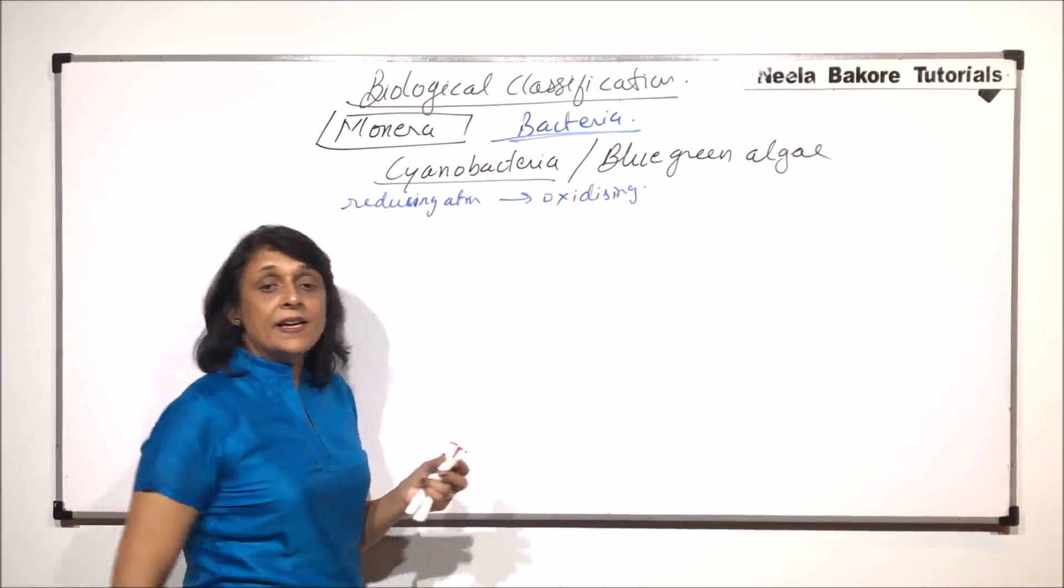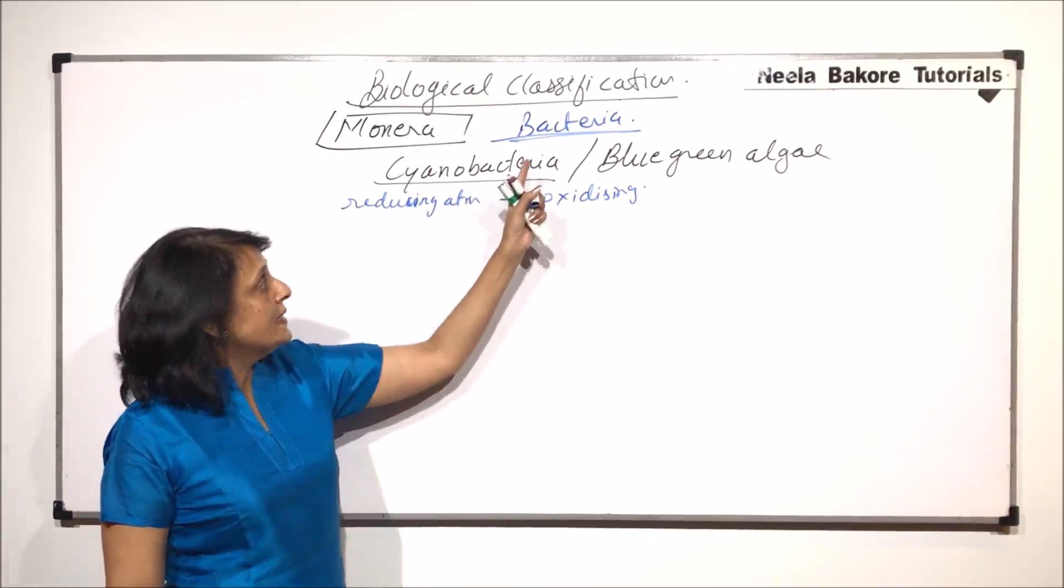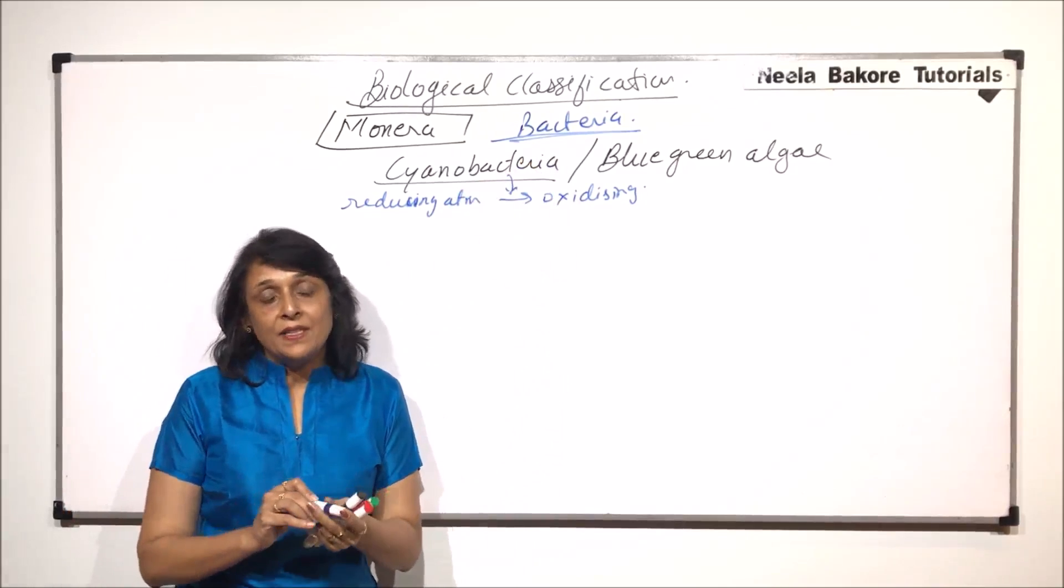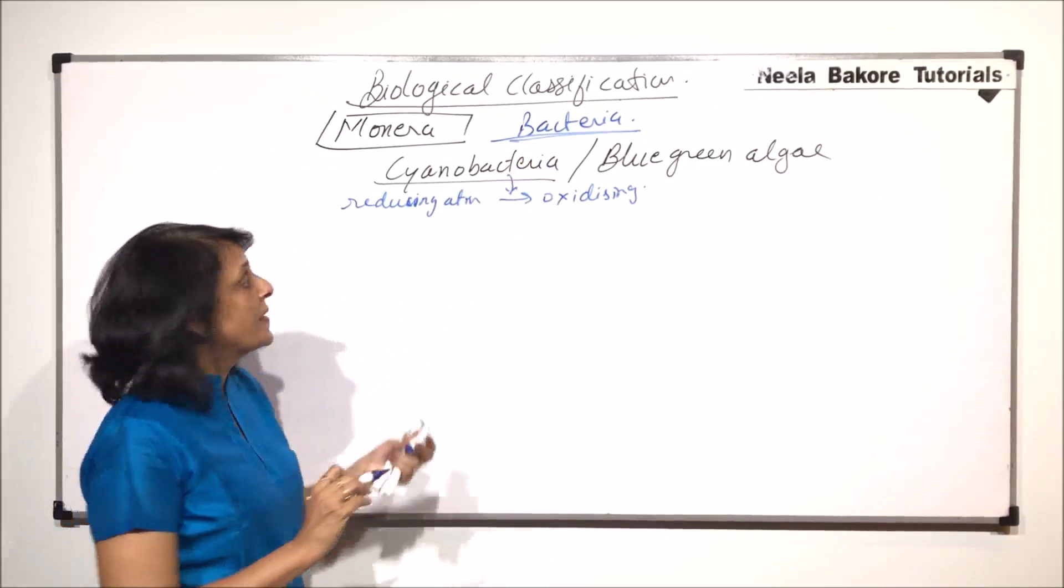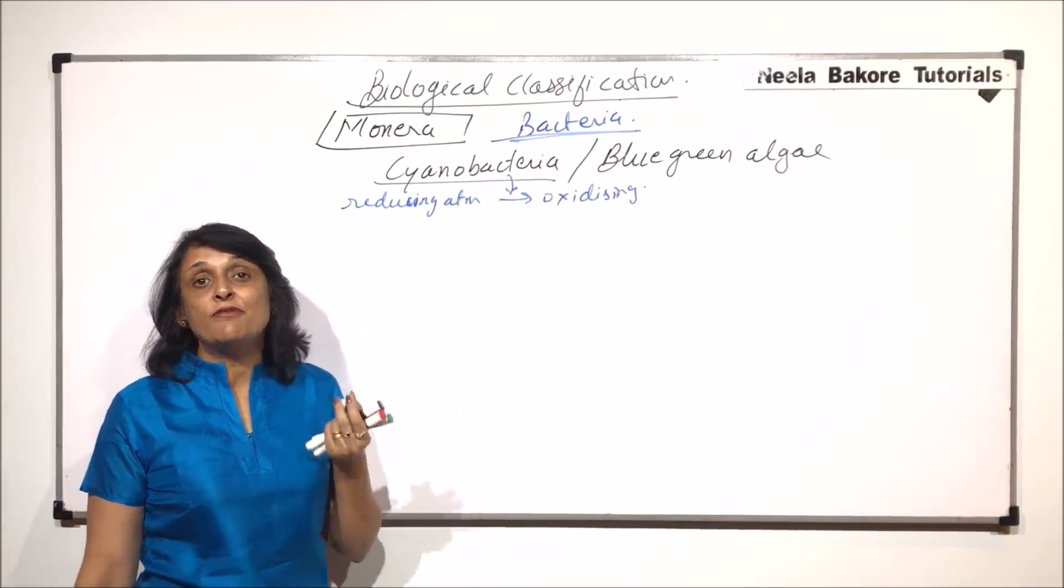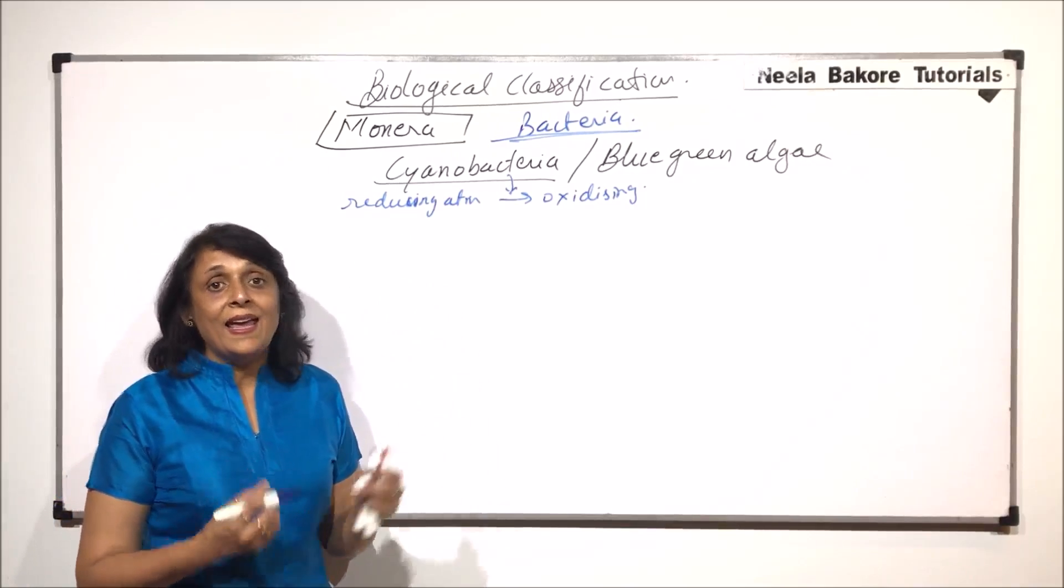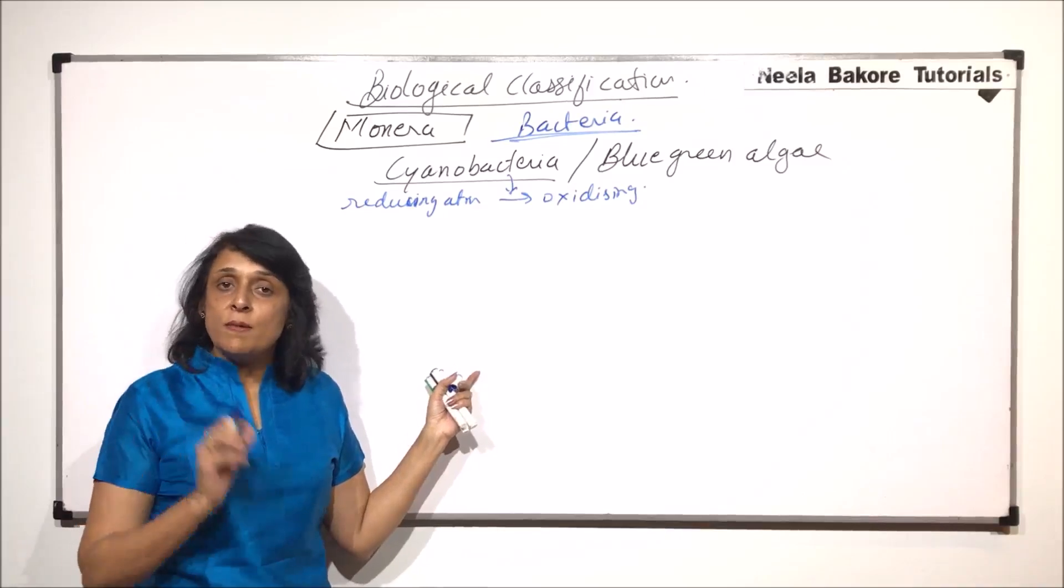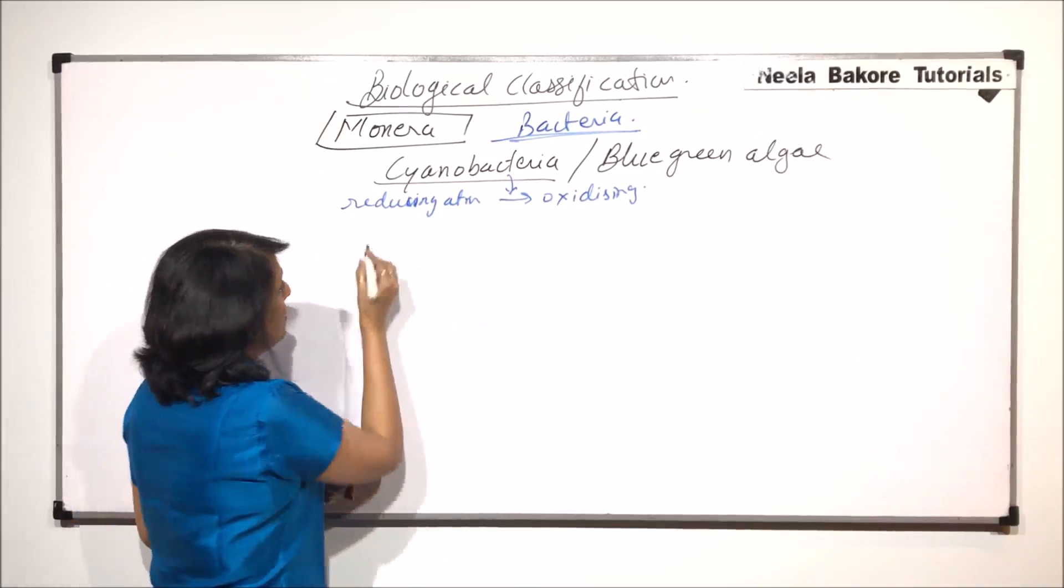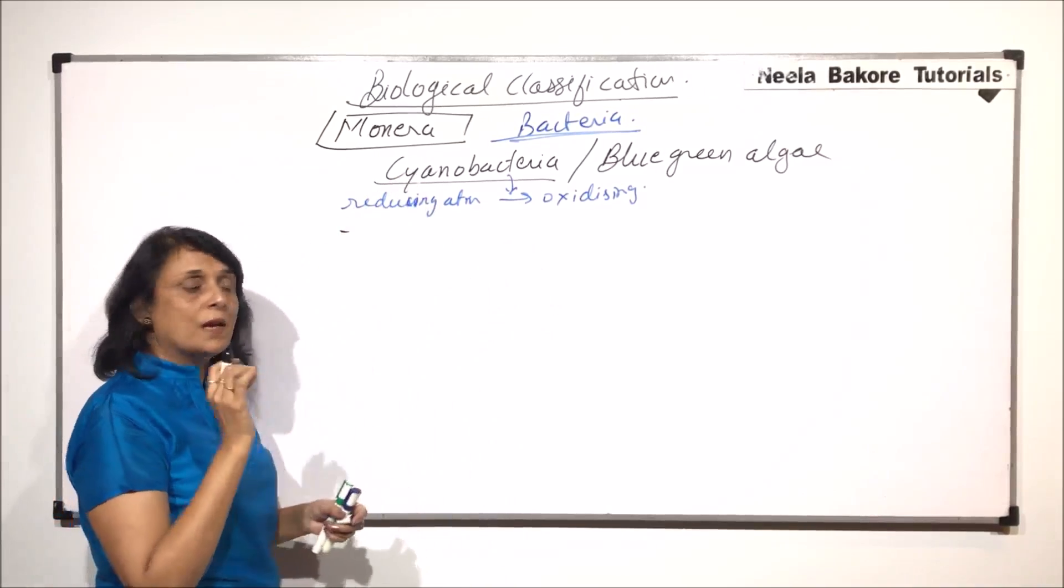This credit goes to these cyanobacteria and they are slightly different from eubacteria in having certain extra structures. When we say that they are performing photosynthesis, that means they have to have pigments. The pigment, one pigment is chlorophyll A and this pigment is present in the membrane. So they must have some membrane-bound structures. Before that, let us talk some basic things about cyanobacteria and then we will come to the structure.